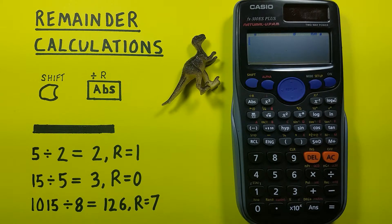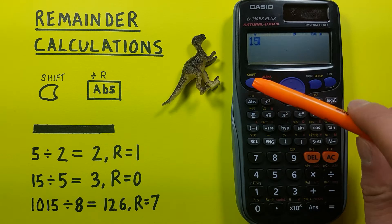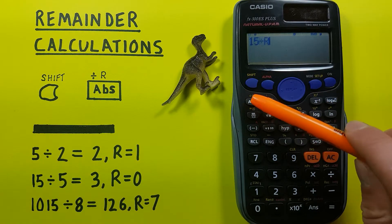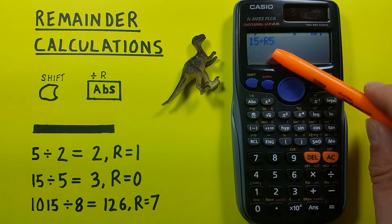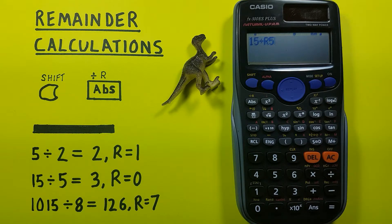Let's try another number, let's try how many times 5 into 15. So again we place 15 on the screen, press shift ABS 5, there we go 15 divided by R5 and we press equals.